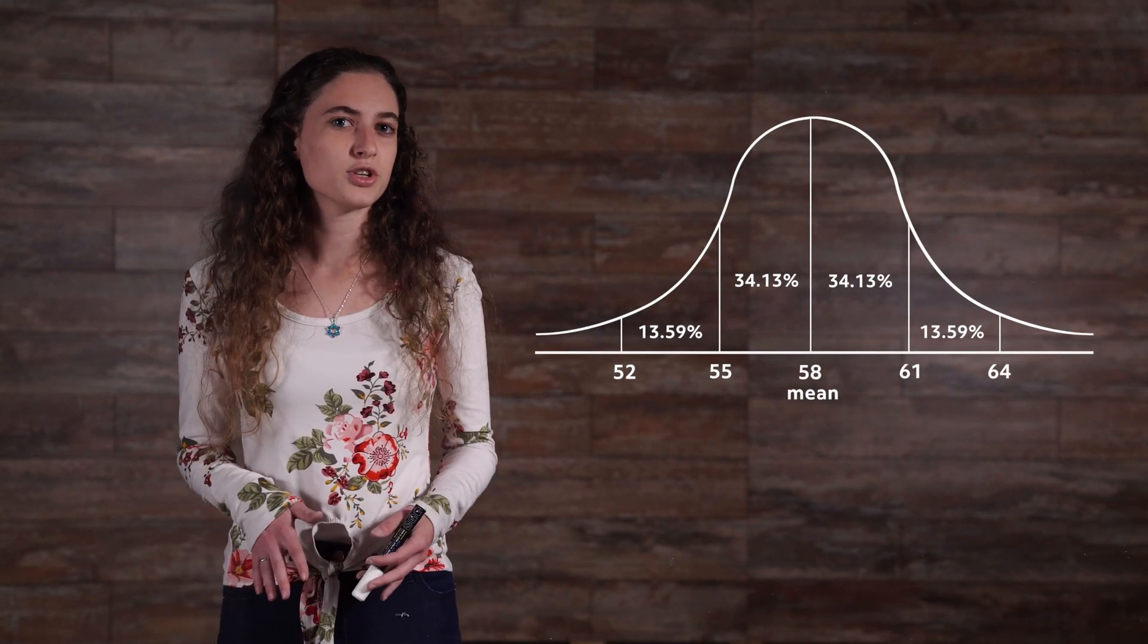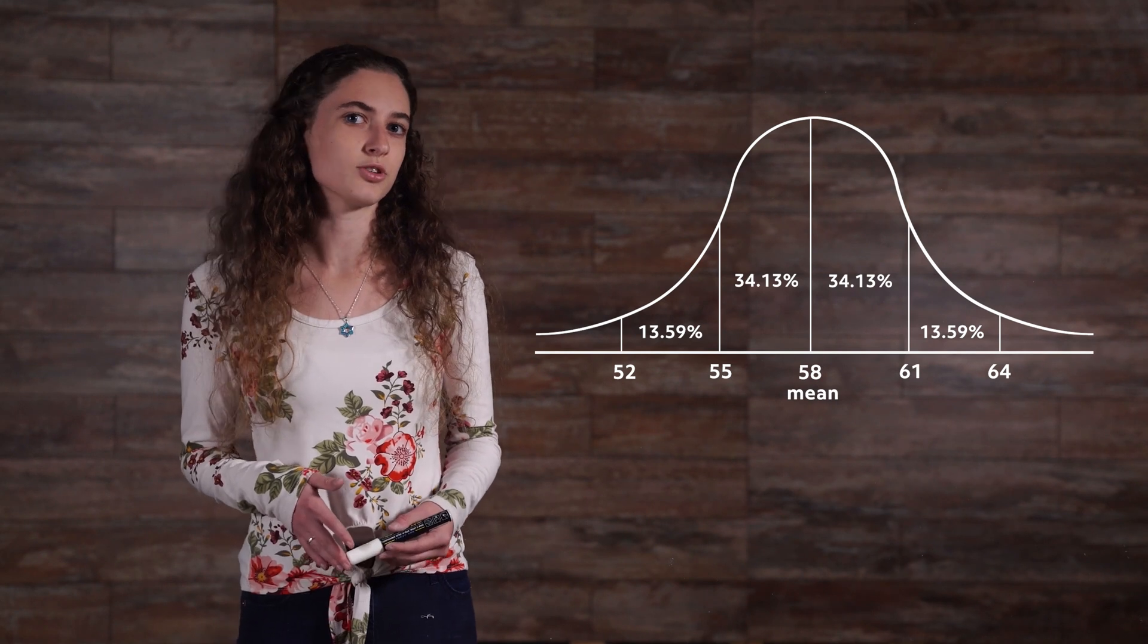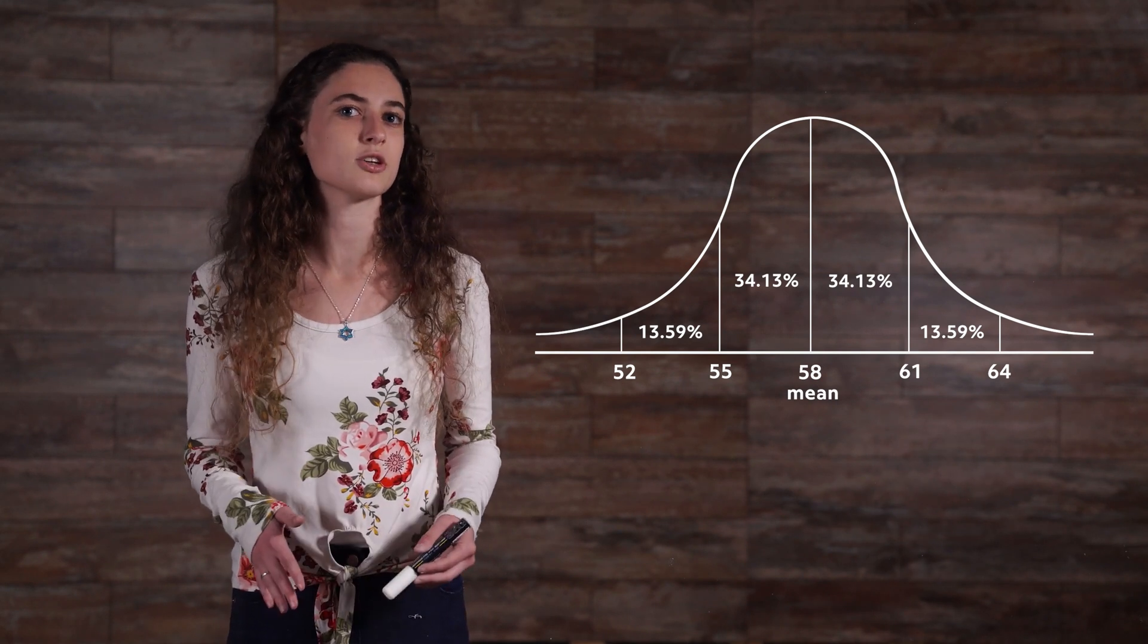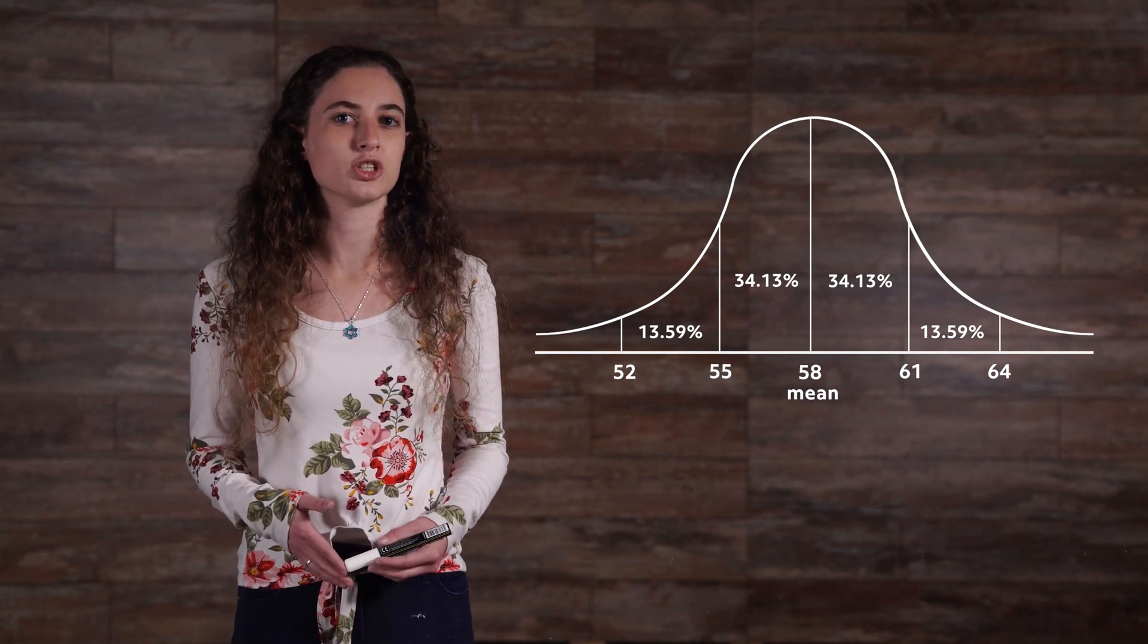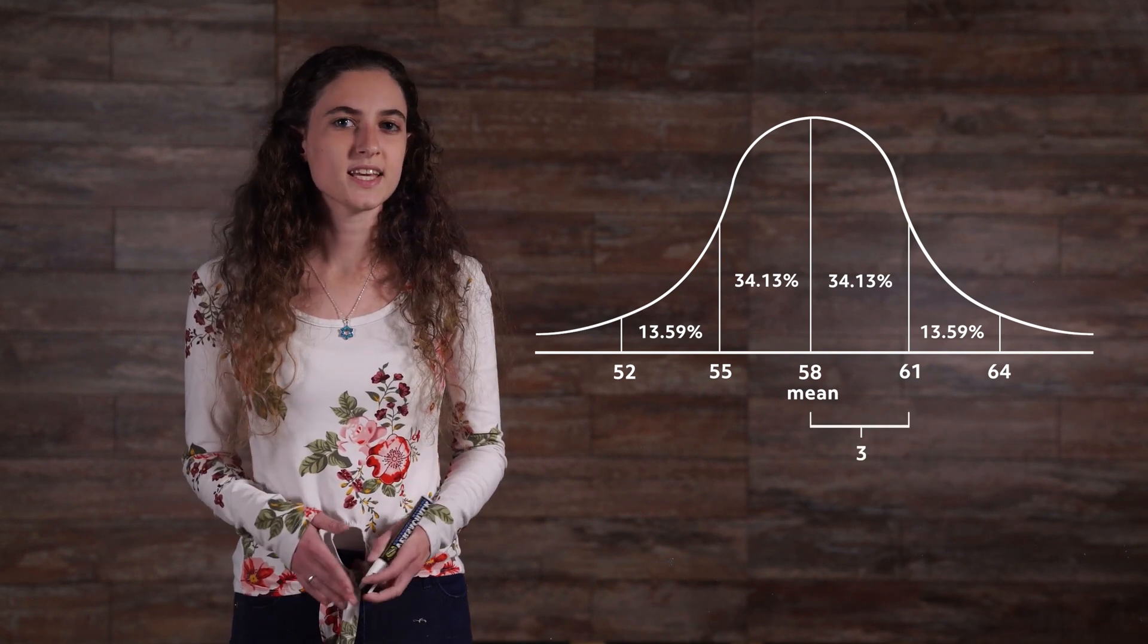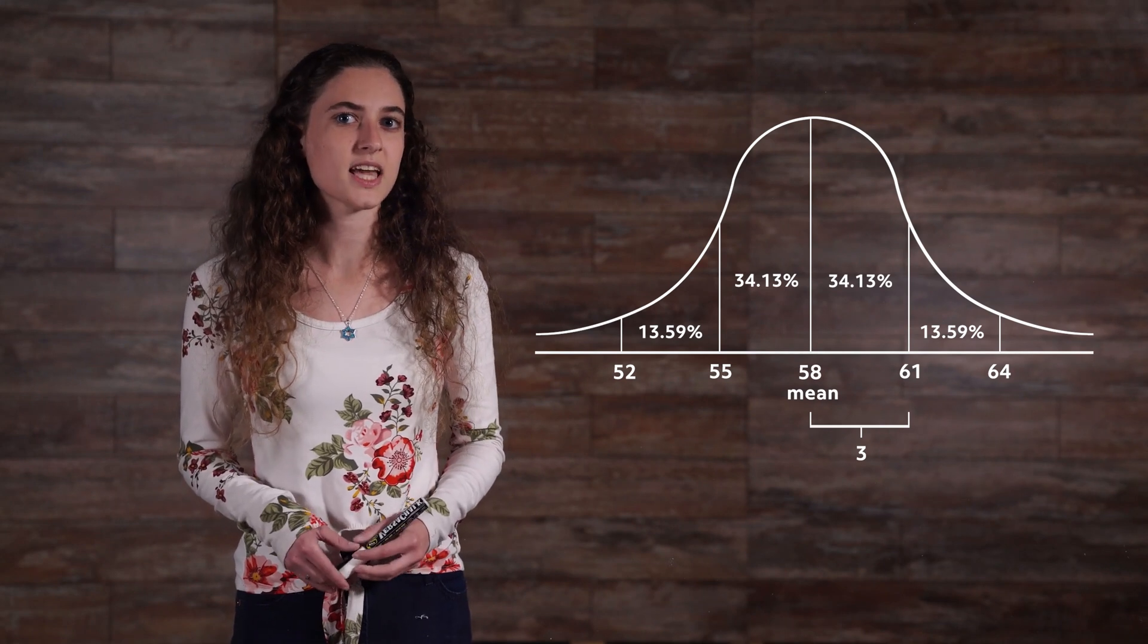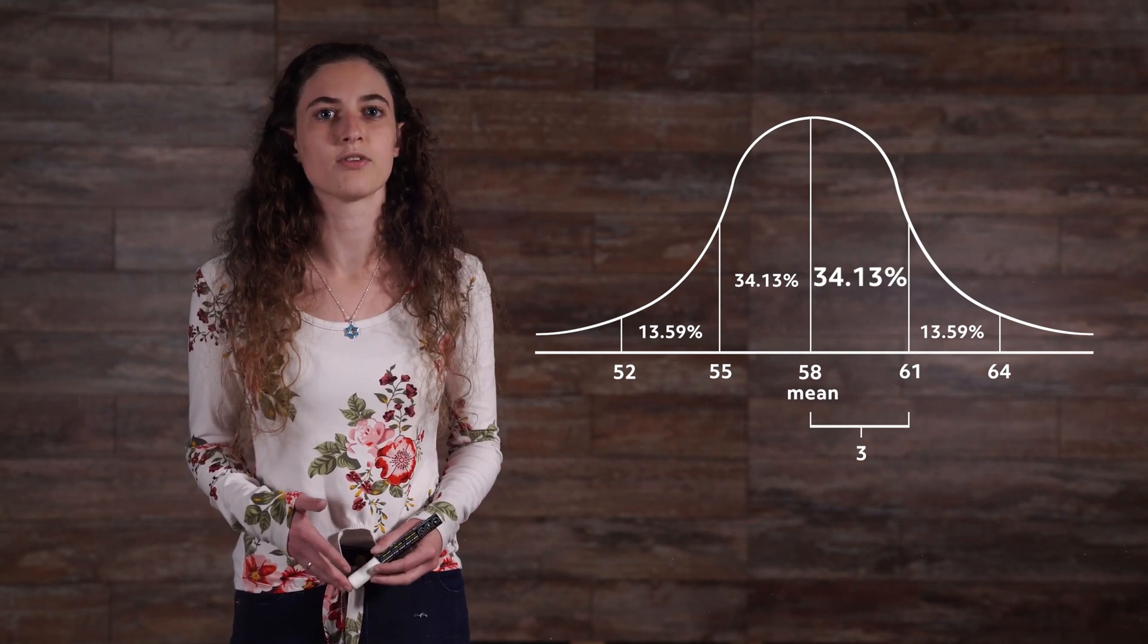If we start in the center and move to the right until we reach the next vertical line, we've moved one standard deviation above the mean, which is the middle. In this example, the standard deviation is 3 inches. We can see in the area under the graph that this accounts for just over 34% of all the students.